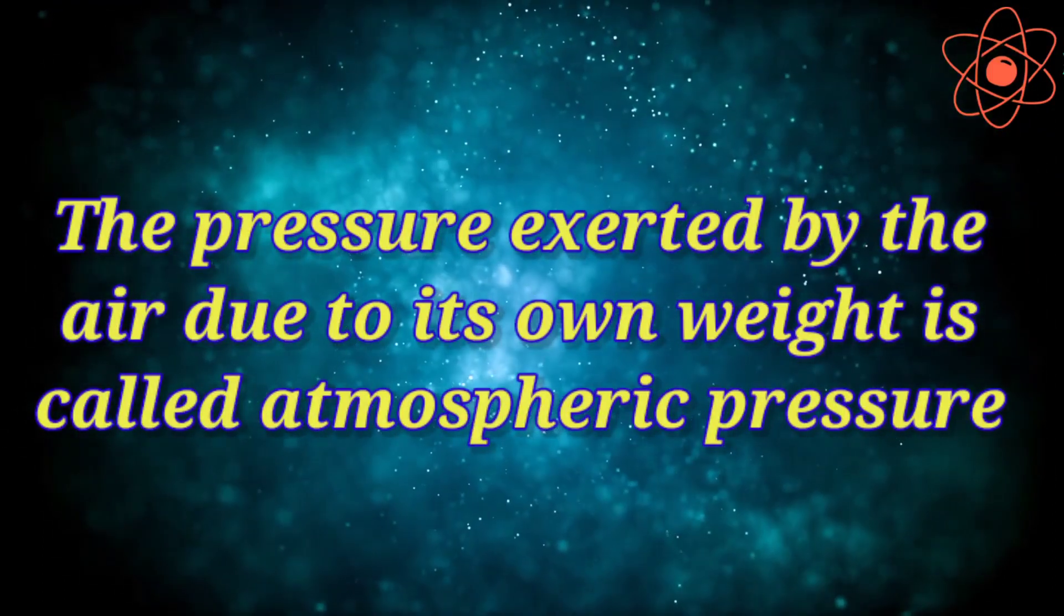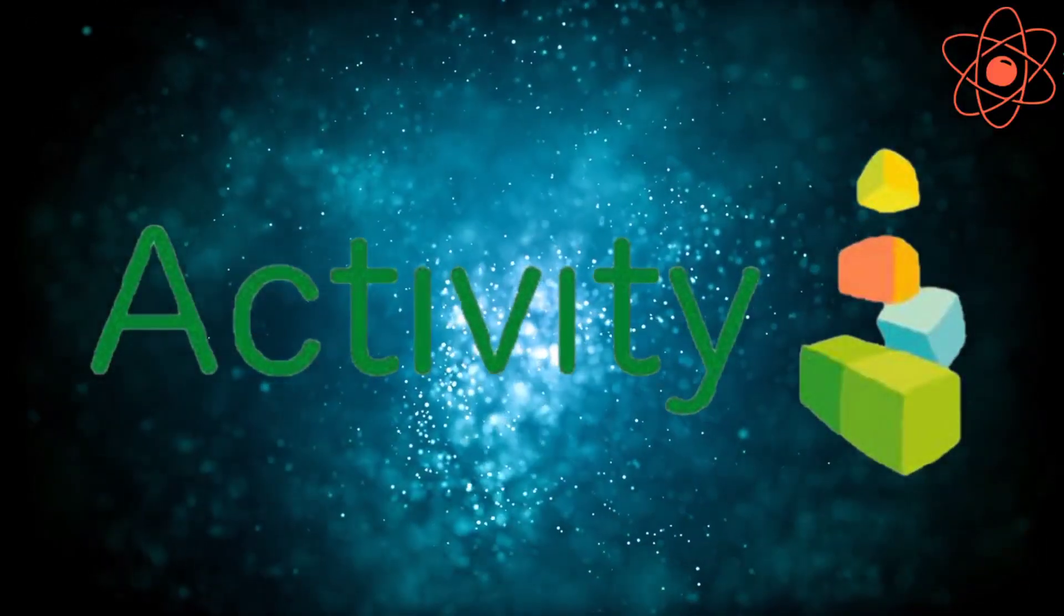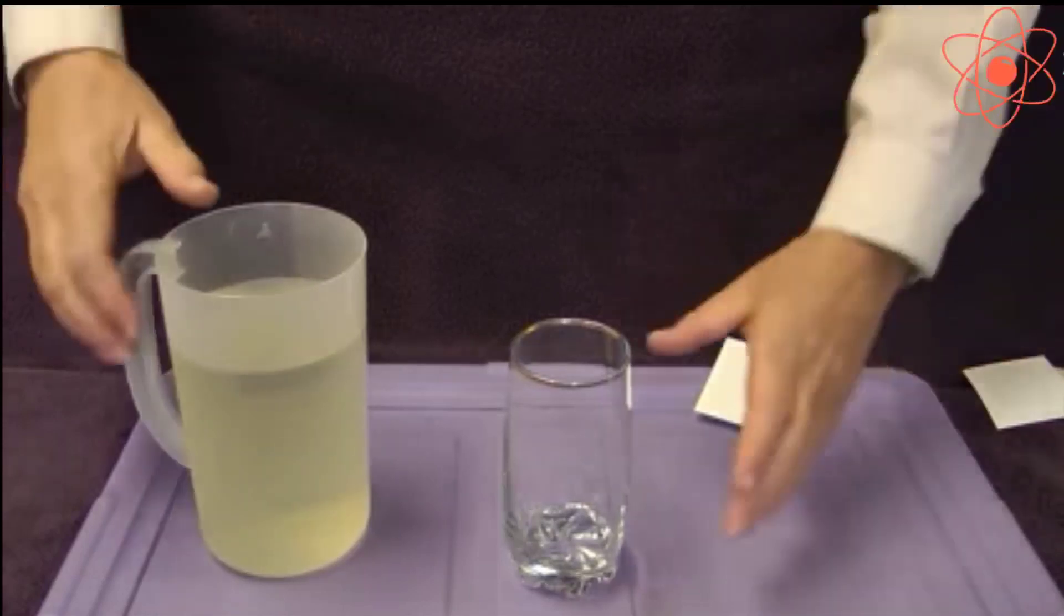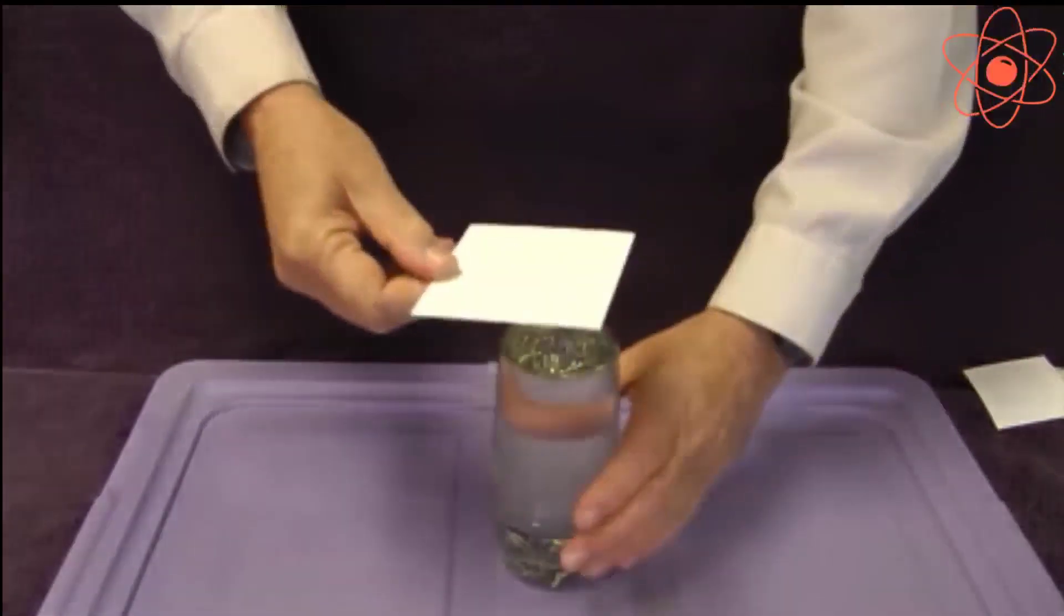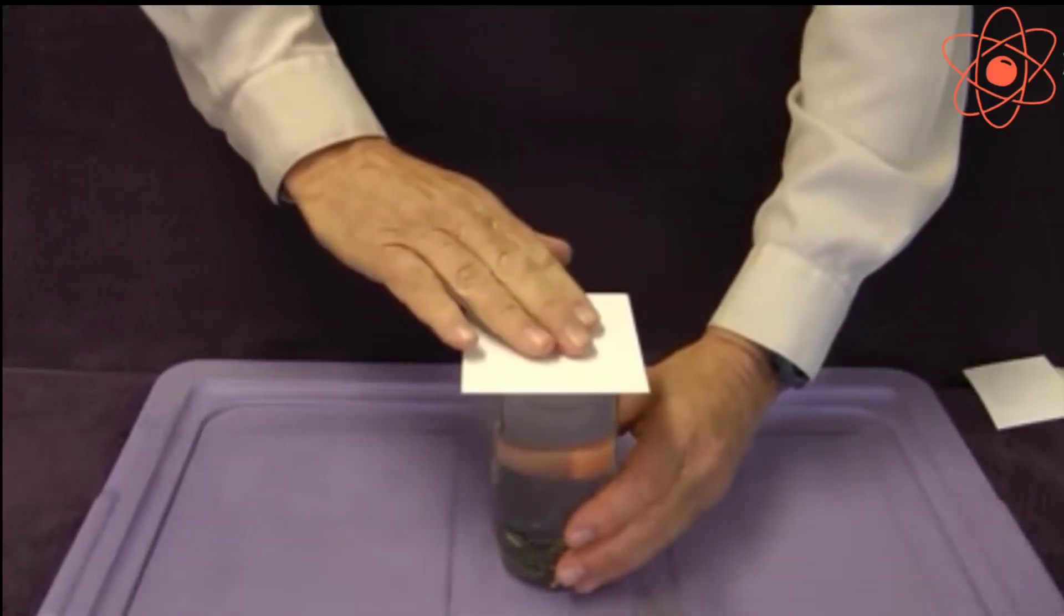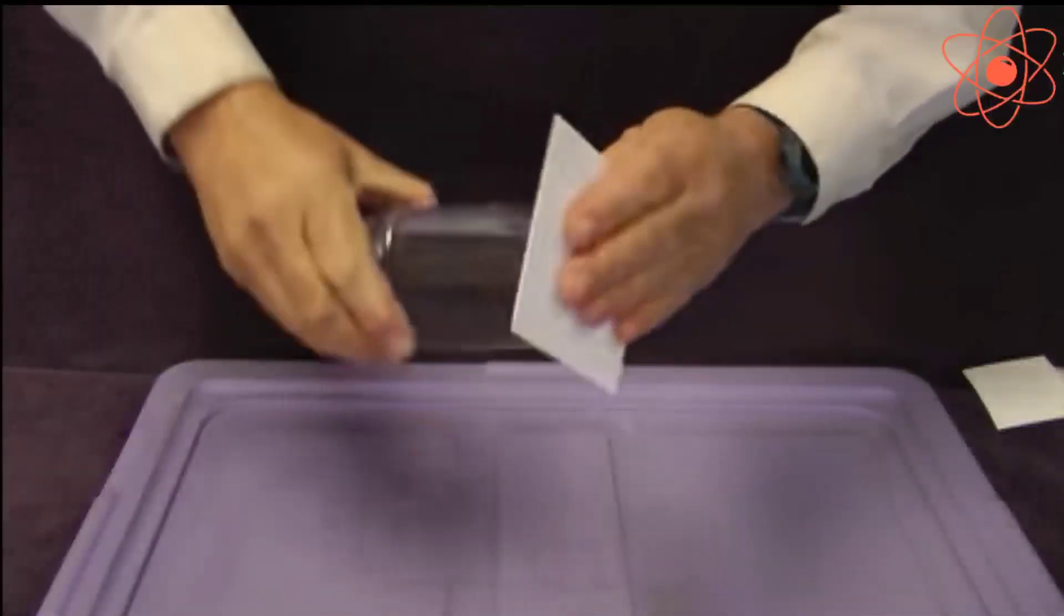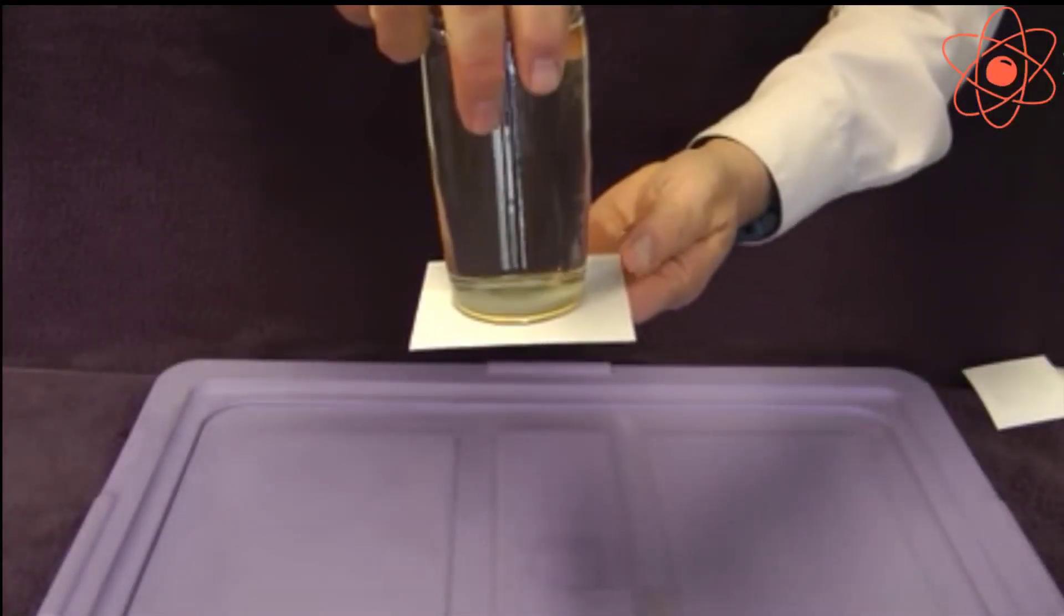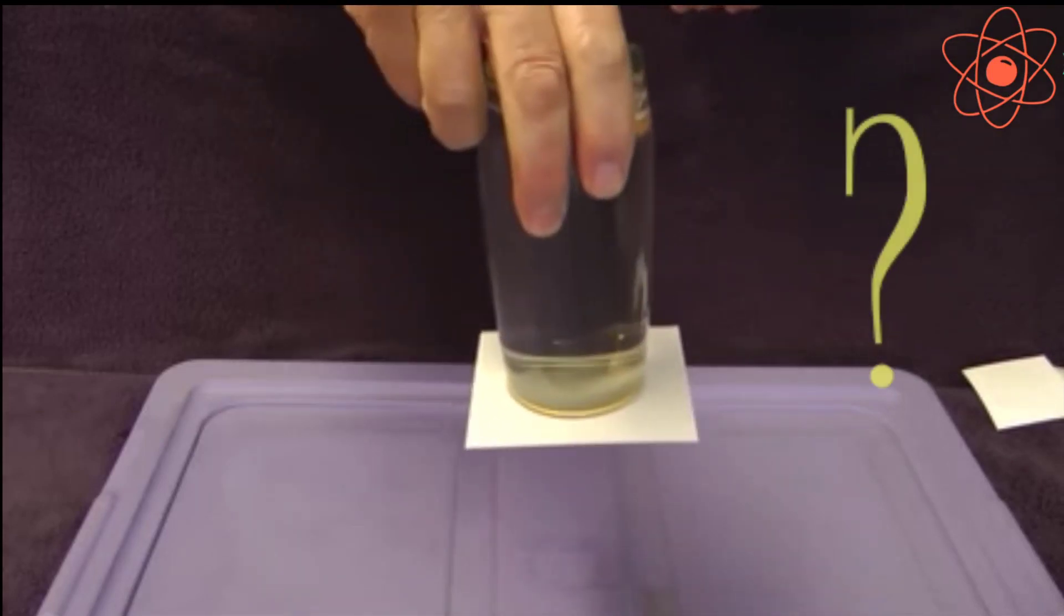Now let us understand this with the help of an activity. Take a glass tumbler and fill it with water. Now place a cardboard on the tumbler and press it on the mouth of the tumbler so that there is no air left inside the tumbler. Hold the tumbler in the hand and invert it upside down.